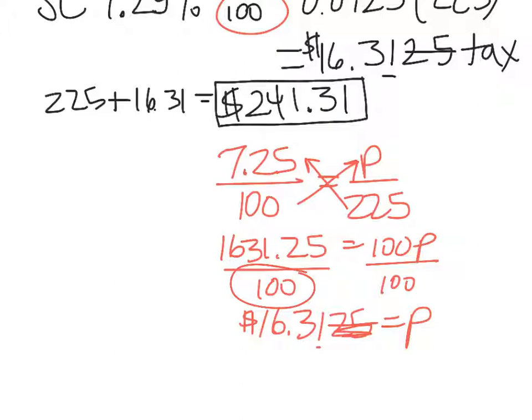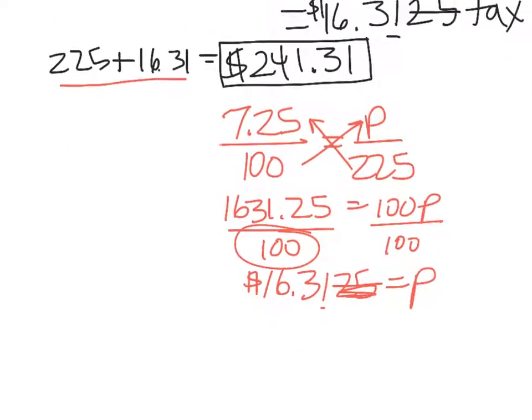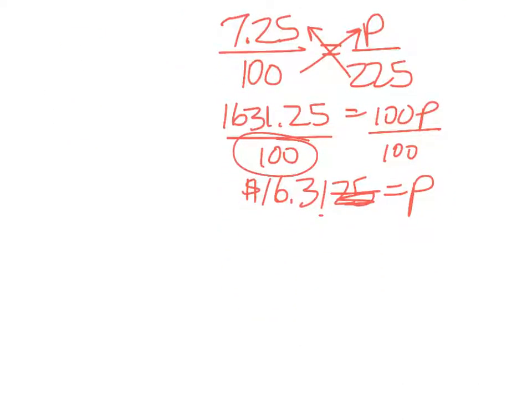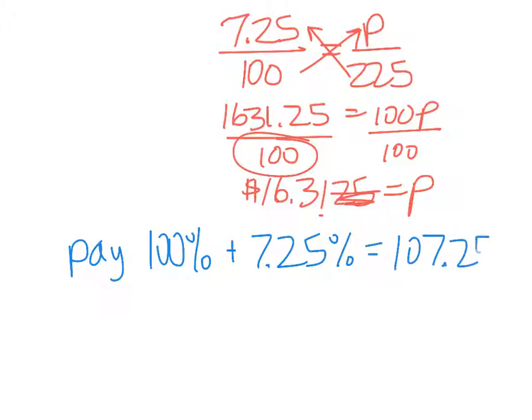And then, of course, we would still add that to the 225 to get our total. Now, there's one more way that we can do this that gets us to the answer faster. We are going to pay 100% of the tablet plus 7.25% of the tablet. So that equals 107.25%.